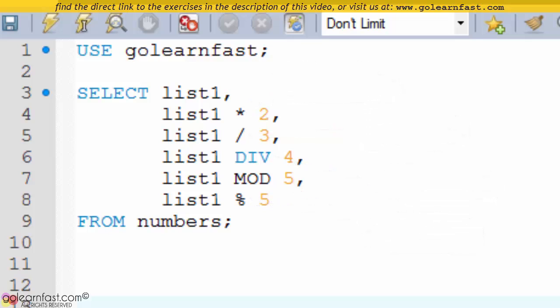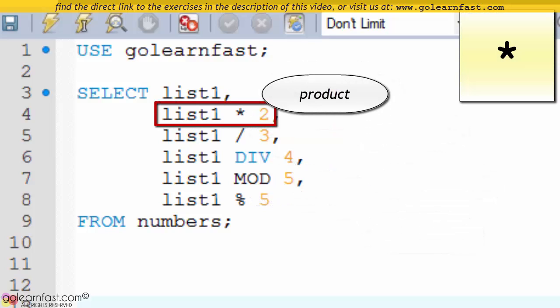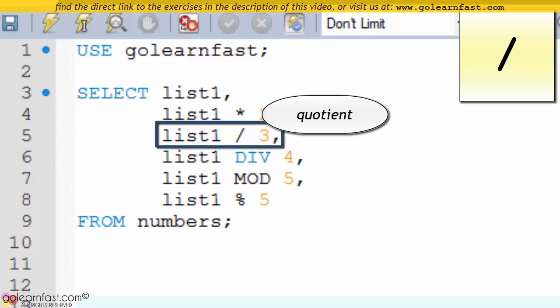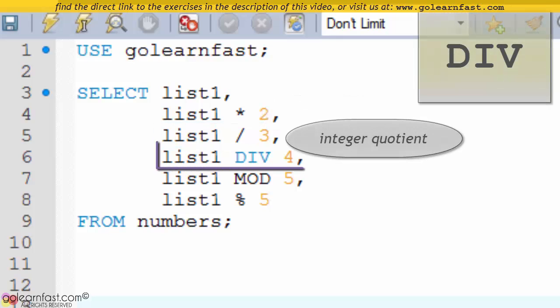In this example the second column contains the product of list1 and 2. The third column contains the quotient of list1 and 3.